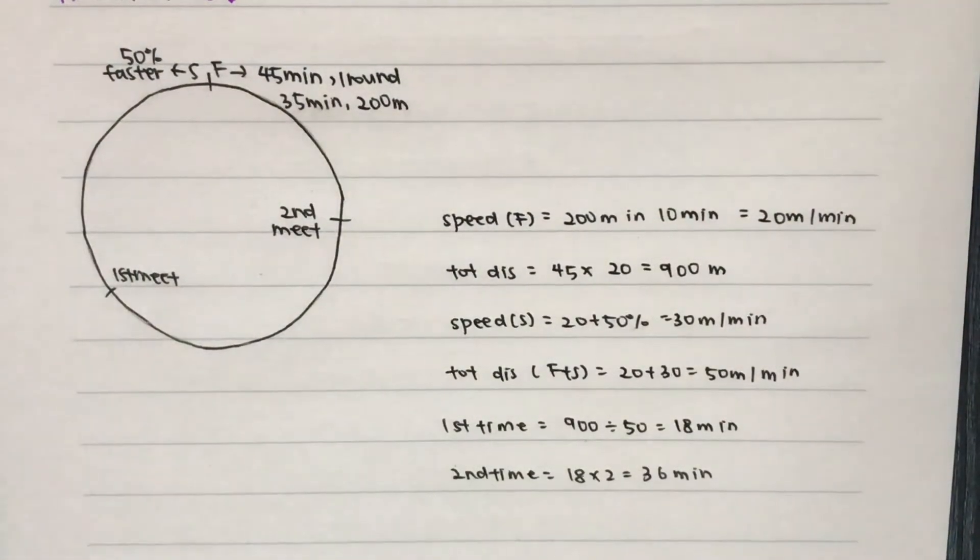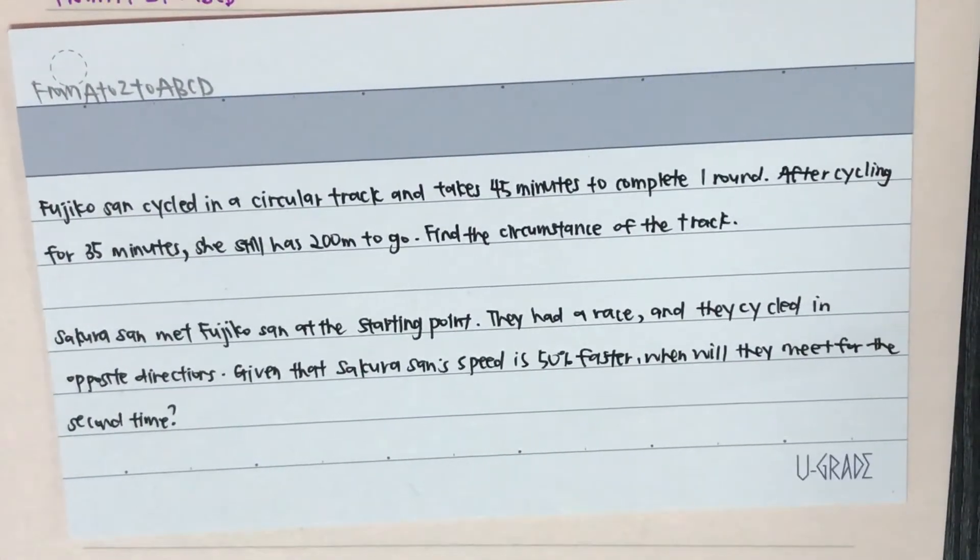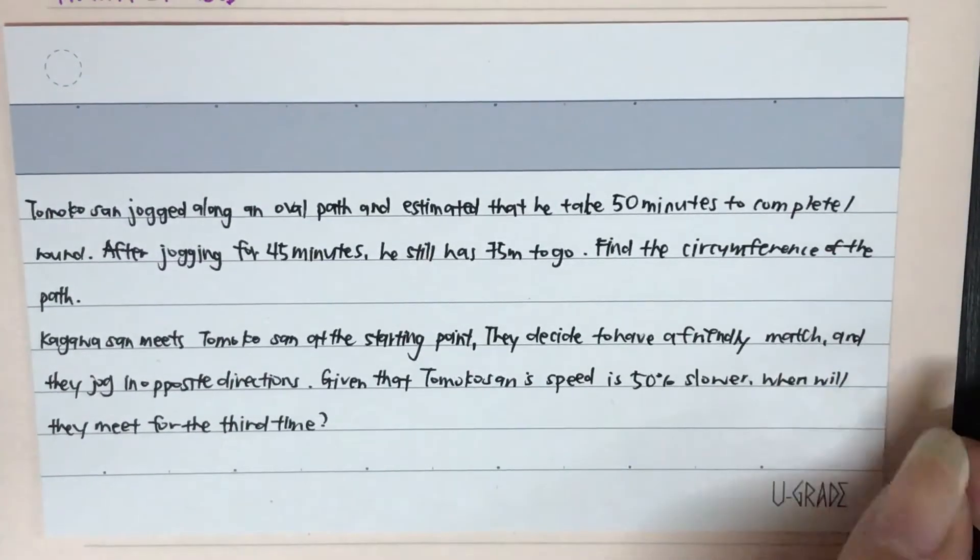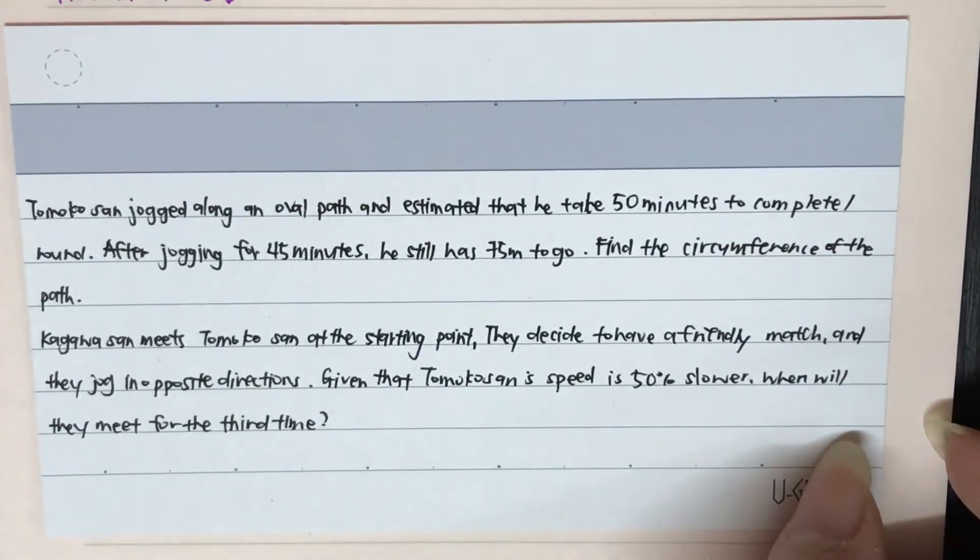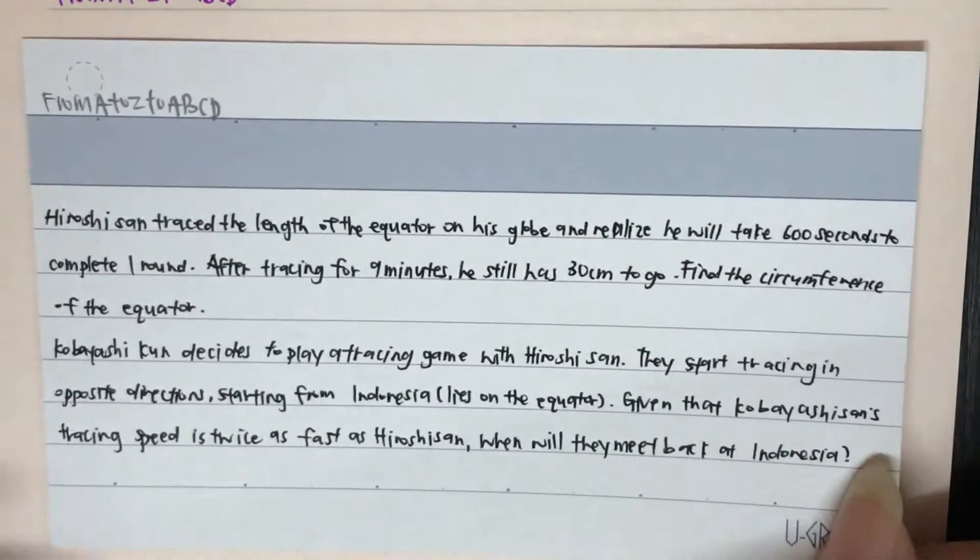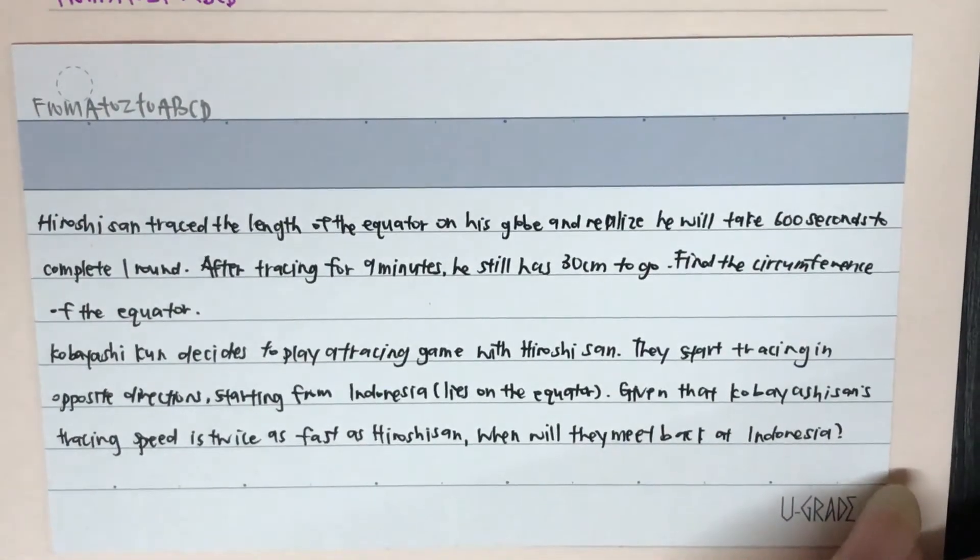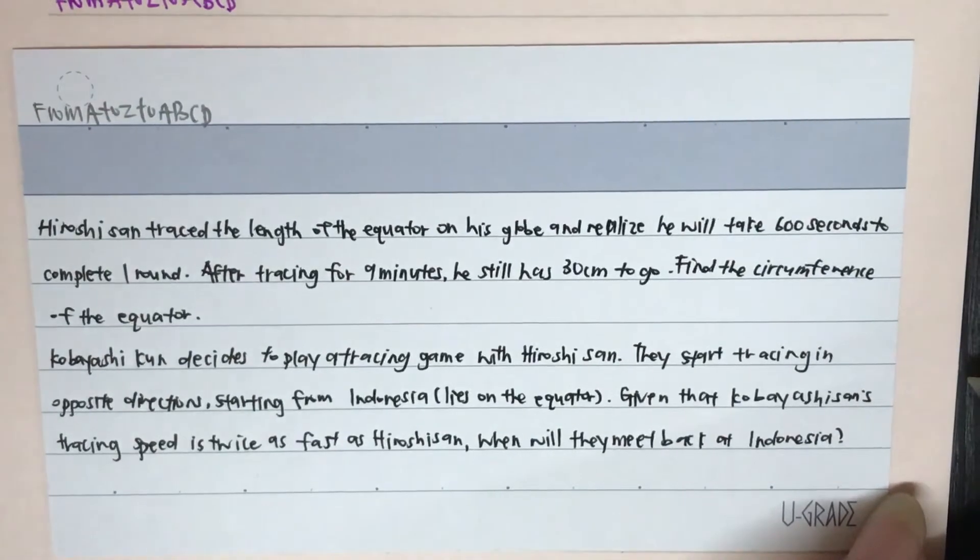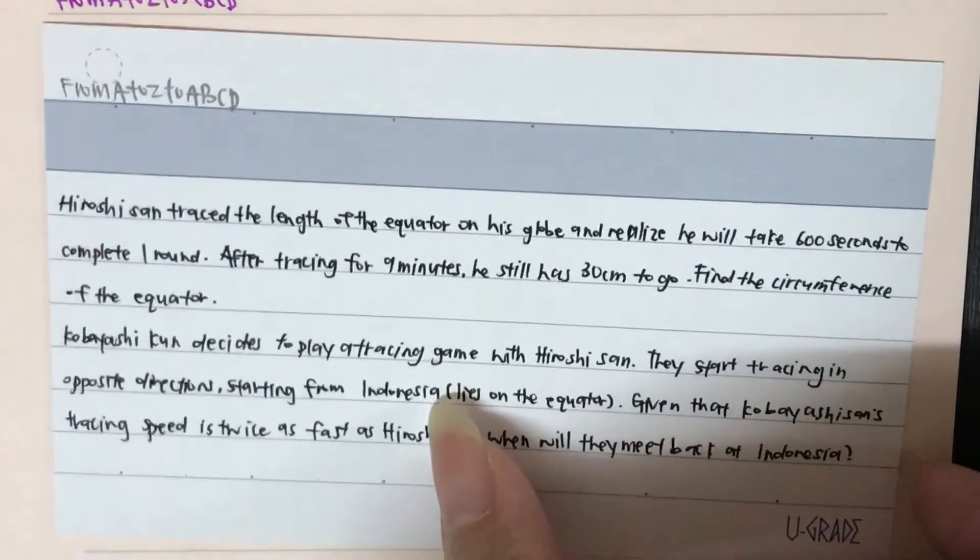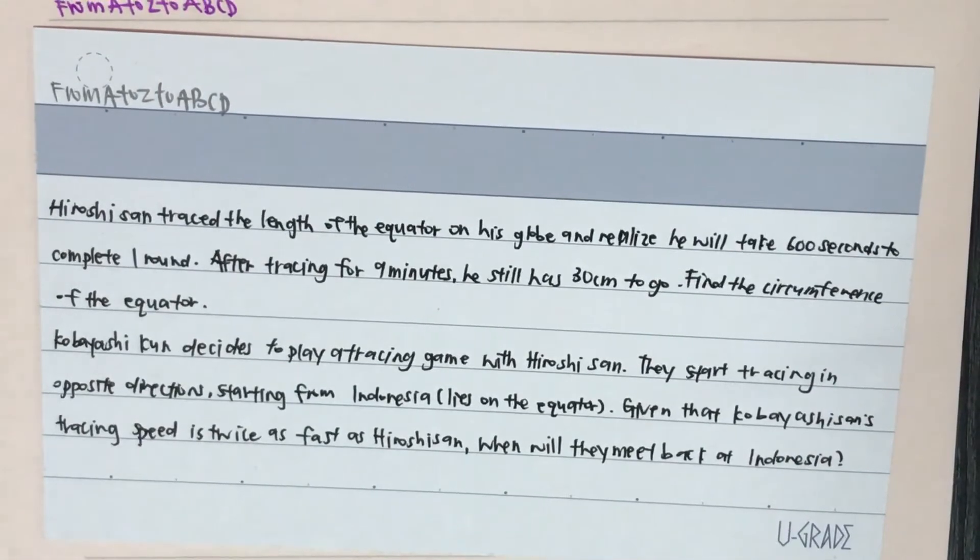The question that we just went through is question 1 of worksheet 34. There's 2 more questions available. This is question 2, the answer is 50 minutes. And this is question 3, the answer is the third time, the third meeting will be at the starting point. If you need assistance to solve these questions, do stay tuned for more as we'll be going through this question with you.